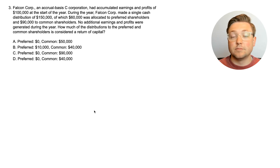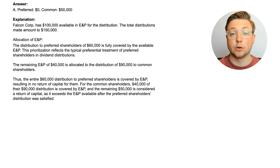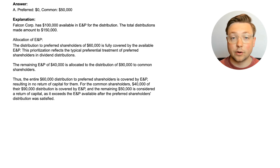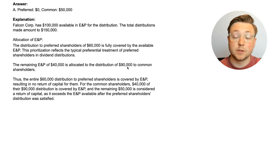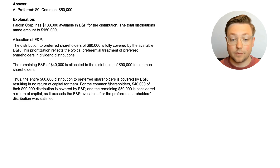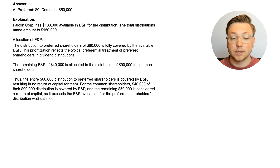The answer is $0 would be considered return of capital to the preferred shareholders, and $50,000 would be considered return of capital to the common shareholders. Falcon Corp had $100,000 of E&P to use, and total distributions were $150,000. When it comes to preferred shareholders, they typically get full prioritization. So the full $60,000 to the preferred shareholders uses up E&P, and the remaining $40,000 is allocated to the common shareholders. The common shareholders had a $90,000 distribution, so only $40,000 is considered dividends from E&P, and the remaining $50,000 is considered a return of capital.